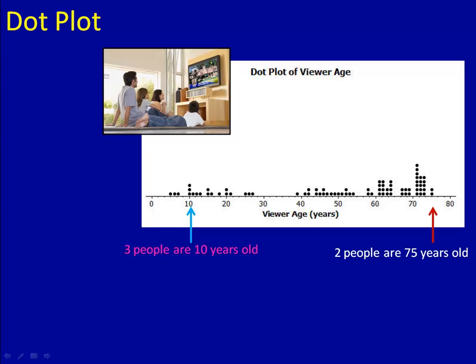So notice there are three dots above the number 10. If I look at the number 75, I see two dots. That means two people who we interviewed were 75 years old. Look over the number 50. There's one dot. What does that one dot stand for? Well, it means that there was one viewer who was 50 years old.